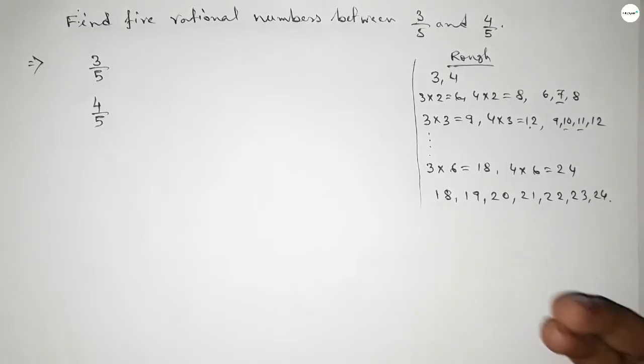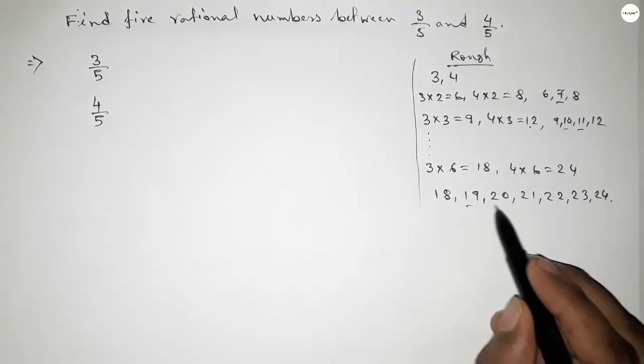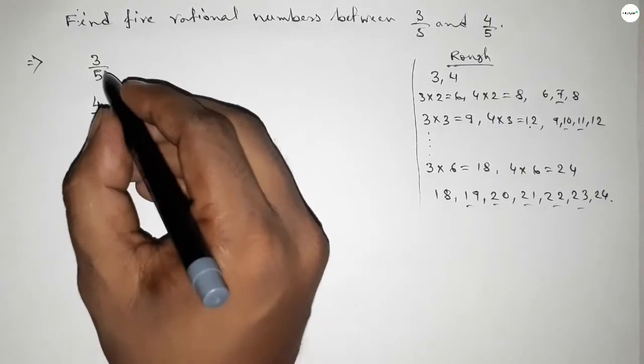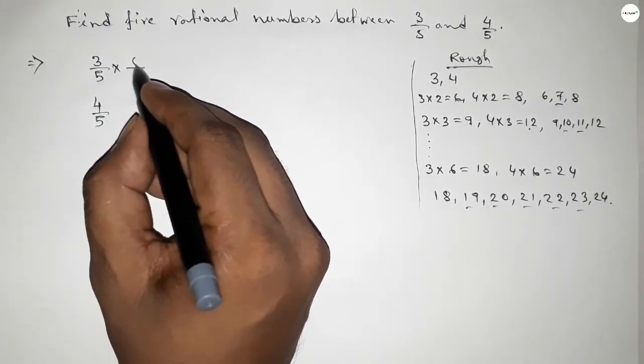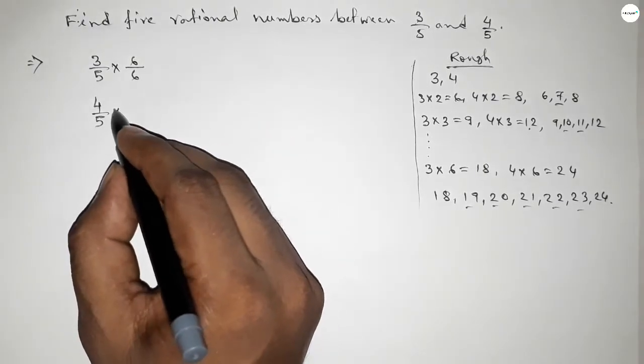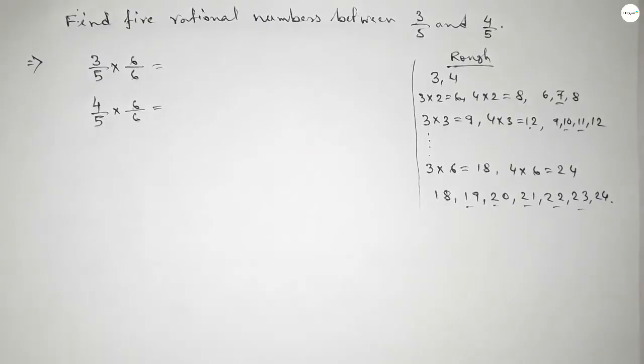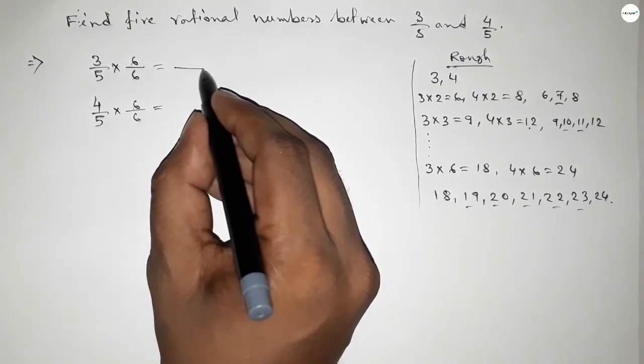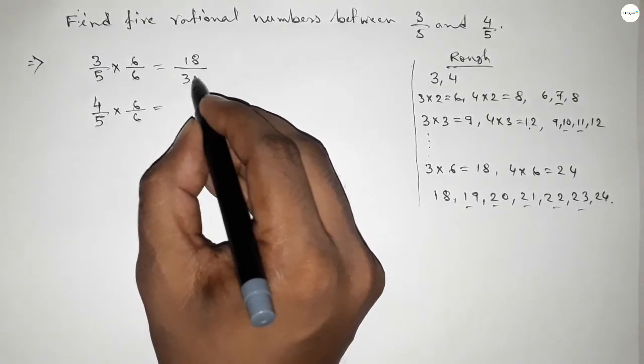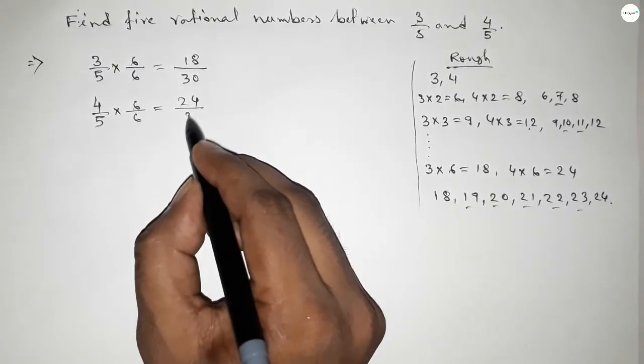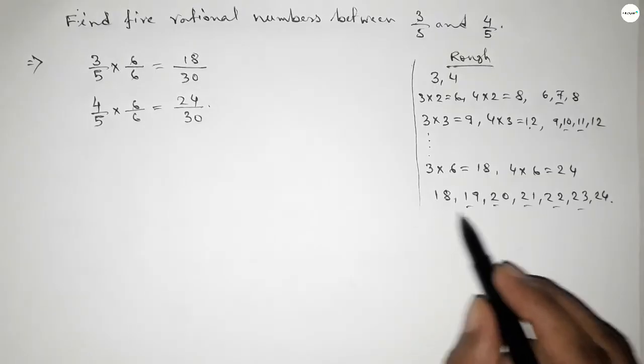These are the 5 natural numbers, so we should multiply both numbers up and down by 6. This gives us 18 over 30 and this is 24 over 30.